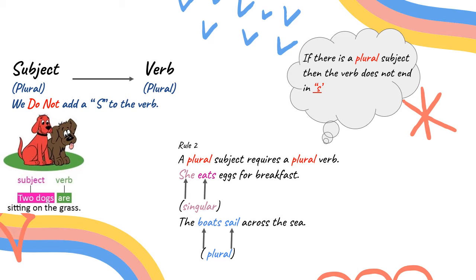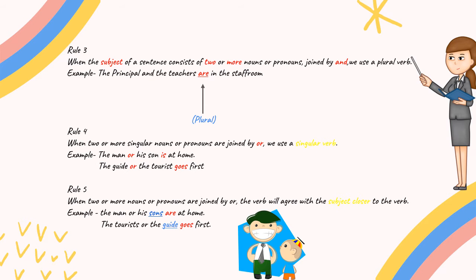If there is a plural subject, then the verb does not end with an S. Rule number 3. When the subject of the sentence consists of two or more nouns or pronouns joined by and, we use a plural verb.